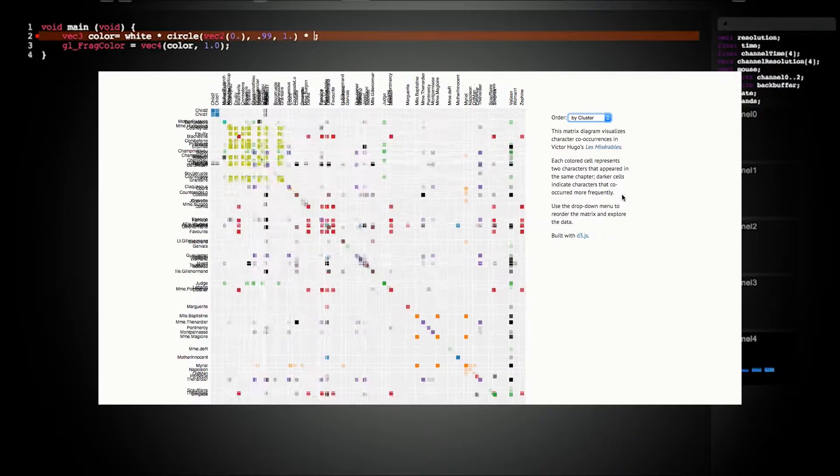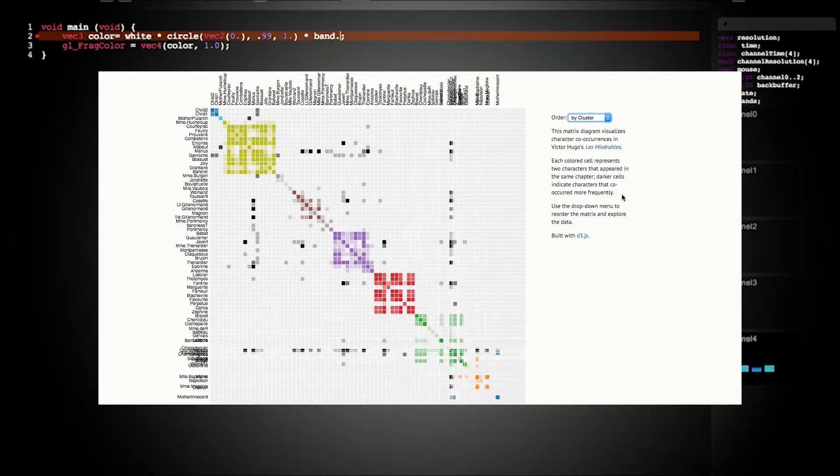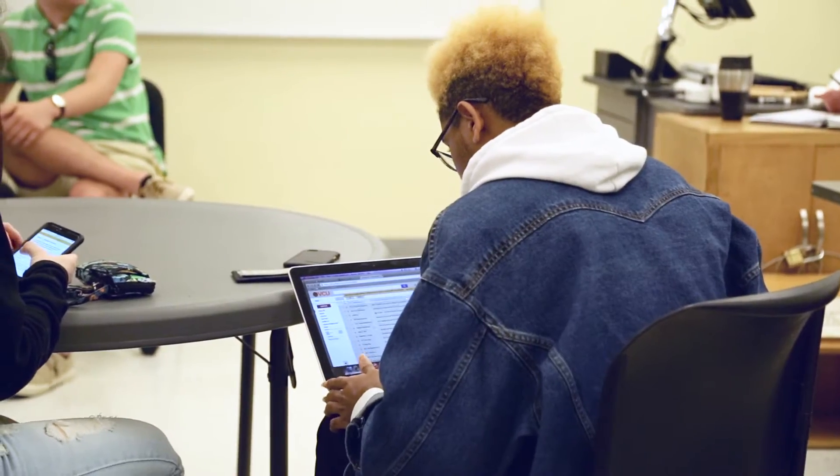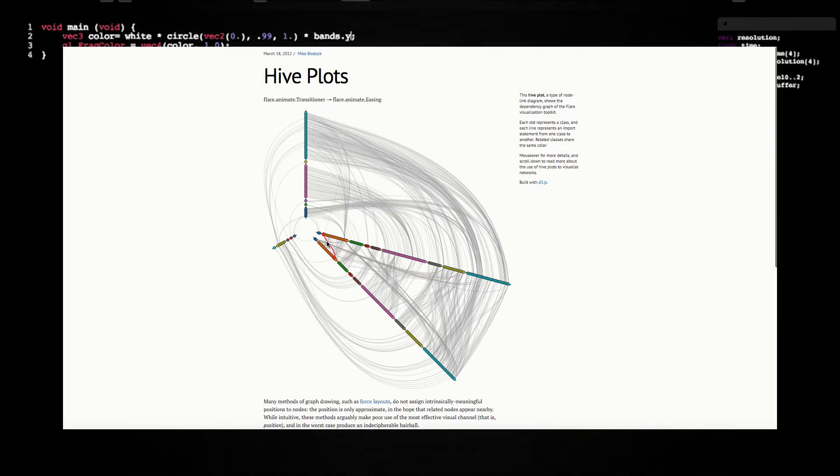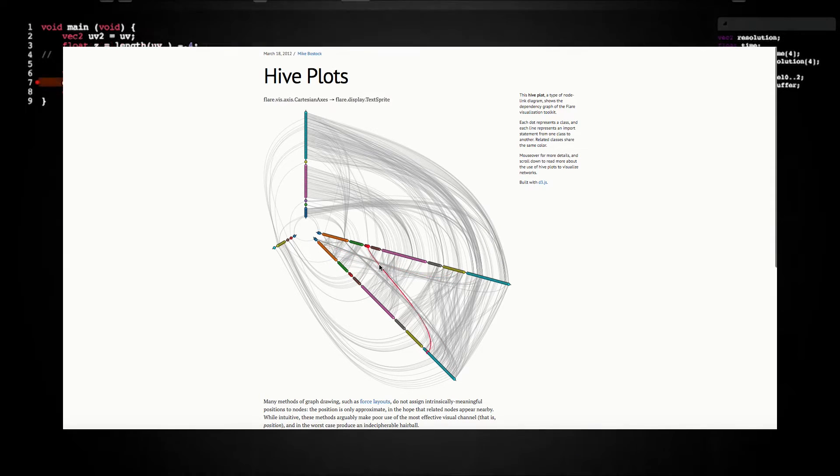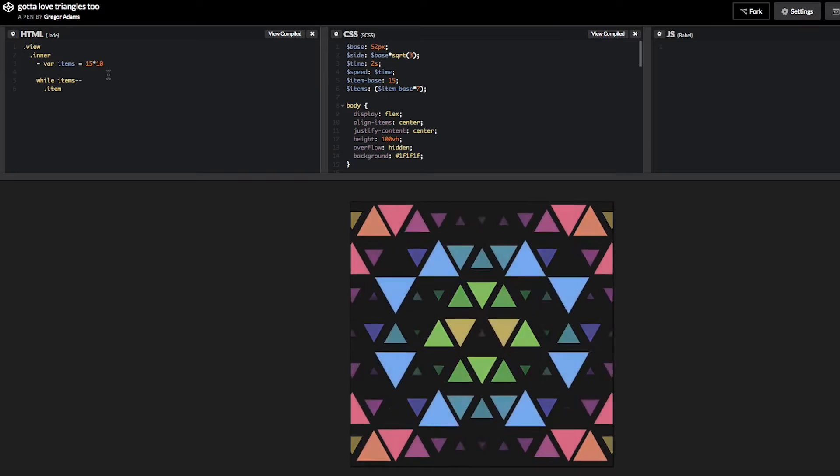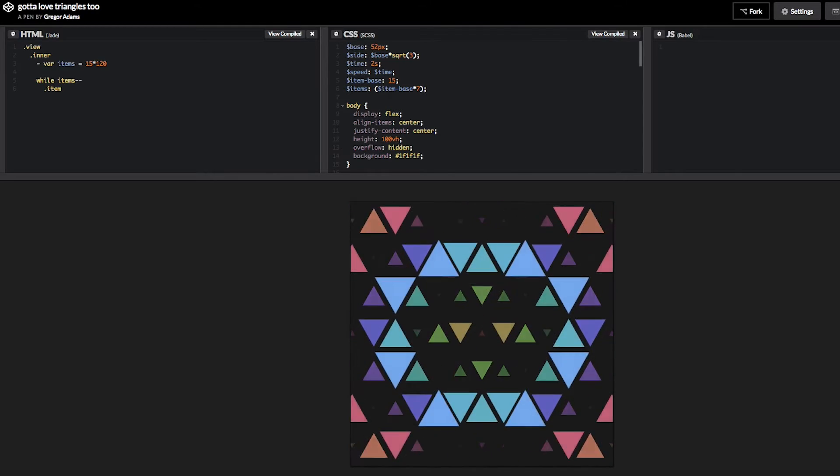The ability to program a computer is a skill that can be learned. In this class we will teach you how to write meaningful and useful computer programs. We will assume that you have no prior knowledge or experience in writing code. But even more than that, we won't even assume that you have an aptitude to do so.